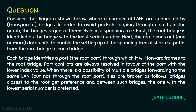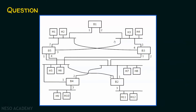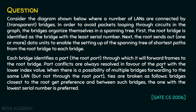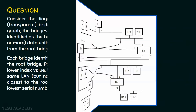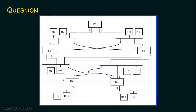Which will be the root bridge? The root bridge is identified as the bridge with the least serial number. We have B1, B2, B3, B4, and B5, so obviously B1 is the root bridge because it has the least serial number. Now, if B3 is connected to B1, it can take port number 3 or port number 4 to reach B1. Port conflicts are resolved in favor of the lower index value, so port number 3 is selected and port number 4 is blocked, because 3 is lower than 4.